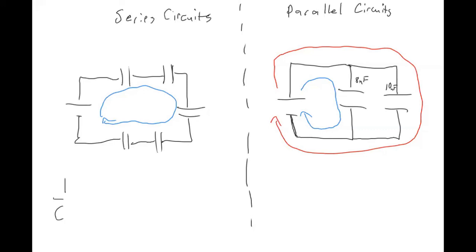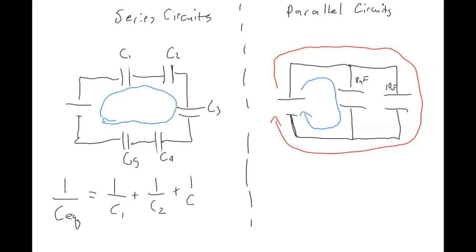It's important to tell these apart because the way we handle capacitors depends on whether they're connected in series or in parallel. In series, to get the total equivalent capacitance of C1, C2, etc., you add them using the reciprocal formula: 1/Ceq = 1/C1 + 1/C2. For a parallel circuit, the equivalent capacitance is simply Ceq = C1 + C2. The Ceq is called the equivalent capacitance.